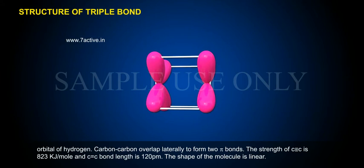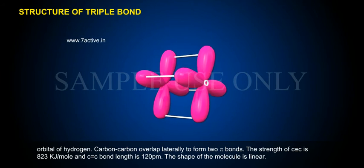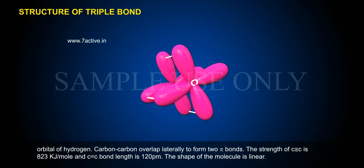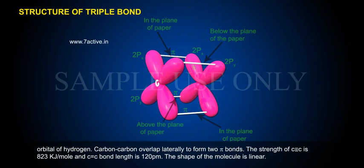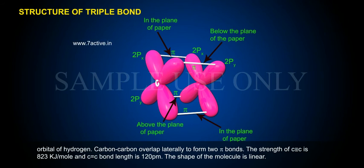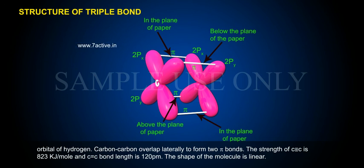The carbons also overlap laterally to form two pi bonds. The strength of the C triple bond C is 823 kJ per mole and the C triple bond C bond length is 120 pm. The shape of the molecule is linear.